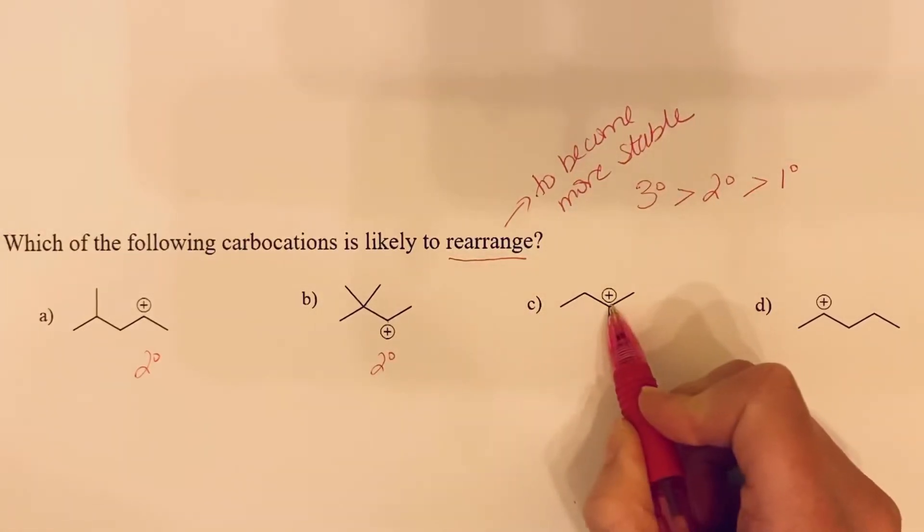In C, the carbocation has bonds to one, two, three other carbons, so this is a tertiary carbocation.